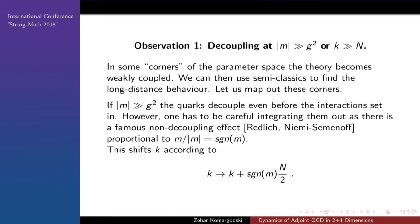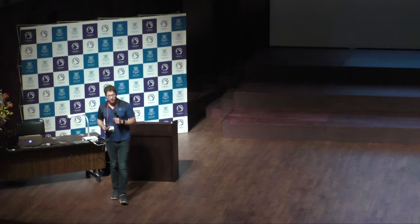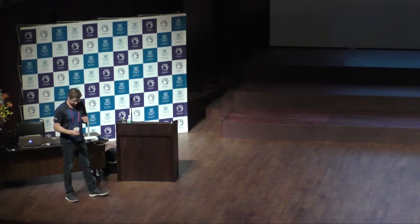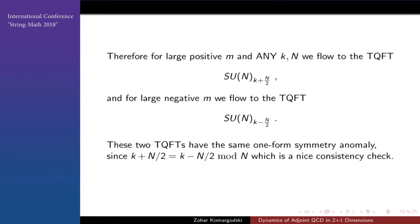In the weak coupling limit when the adjoint quarks are extremely heavy, they don't participate much in the dynamics and one can integrate them out. But in 2+1 dimensions, integrating out heavy quarks is not a straightforward procedure, as was pointed out in the 1980s. A massive heavy fermion shifts the Chern-Simons level by a quantized amount. So when we integrate out these heavy fermions, the effective Chern-Simons level needs to be shifted by ±N/2, depending on whether the mass is large and positive or large and negative.